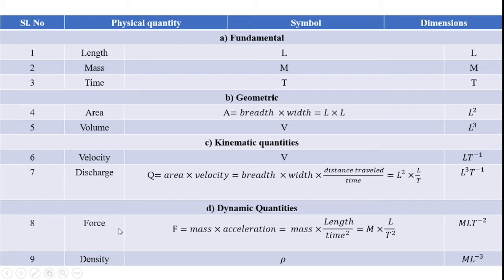Similarly, if I want to calculate the dimension for density — density can be expressed with the formula of mass per unit volume. Mass has dimension M, and unit volume is breadth into length into width.